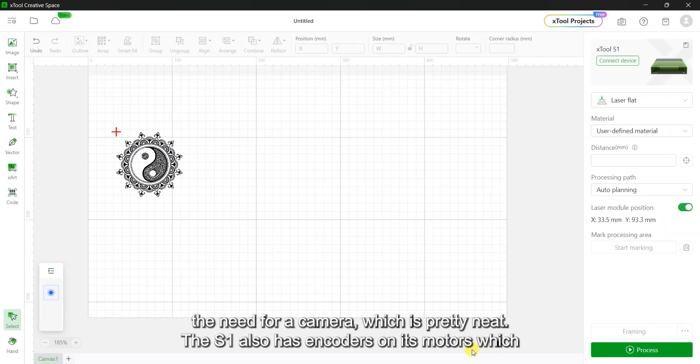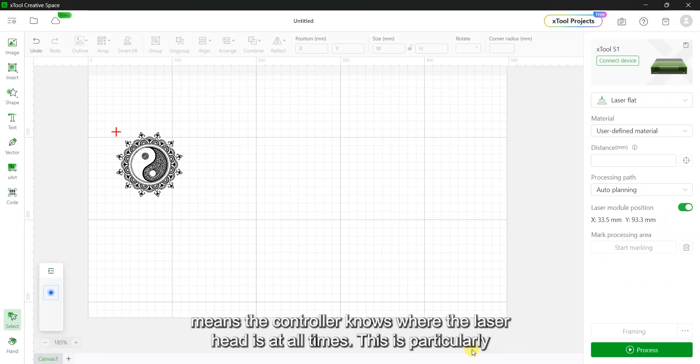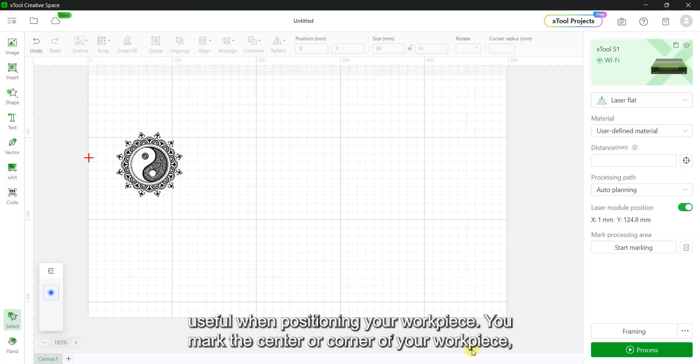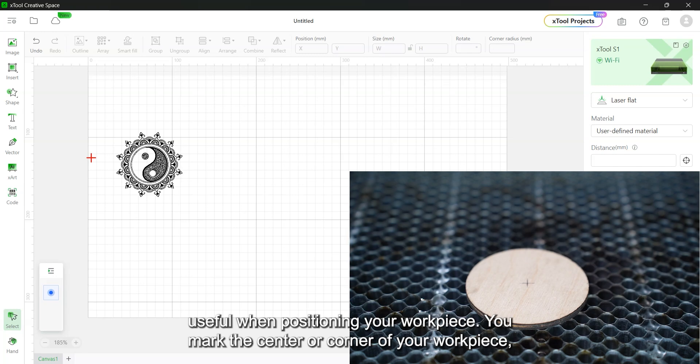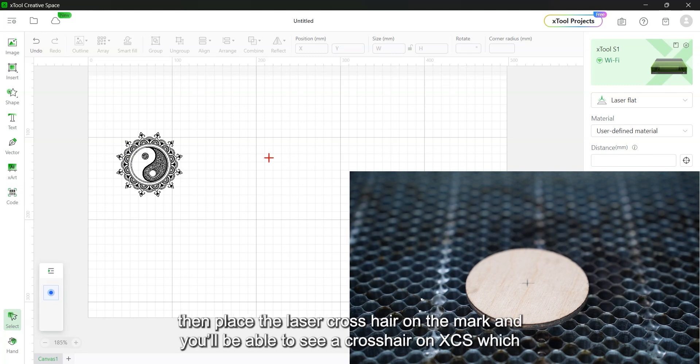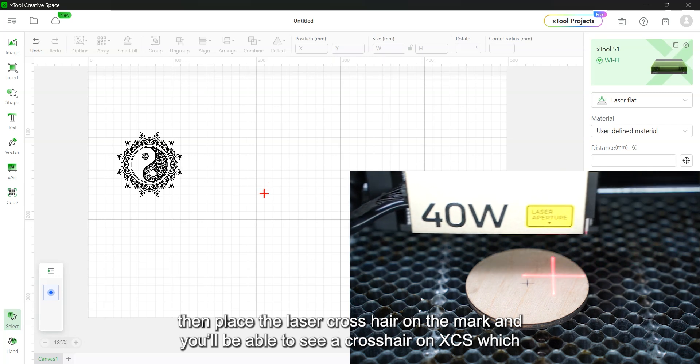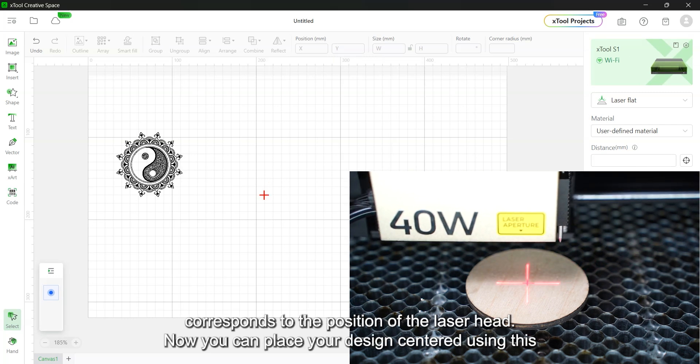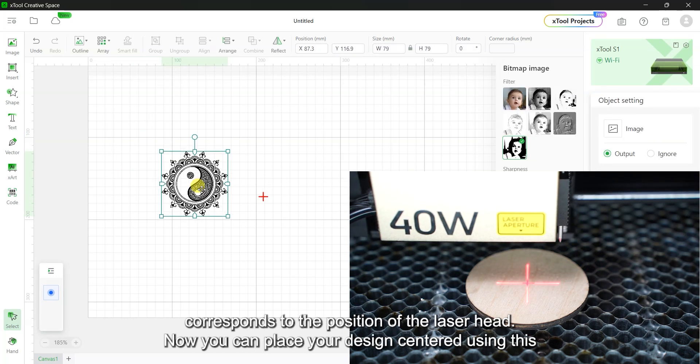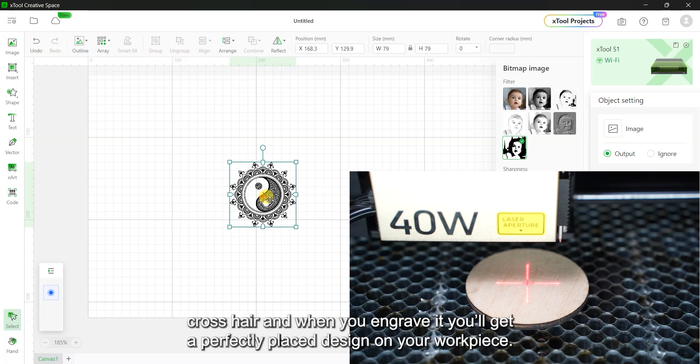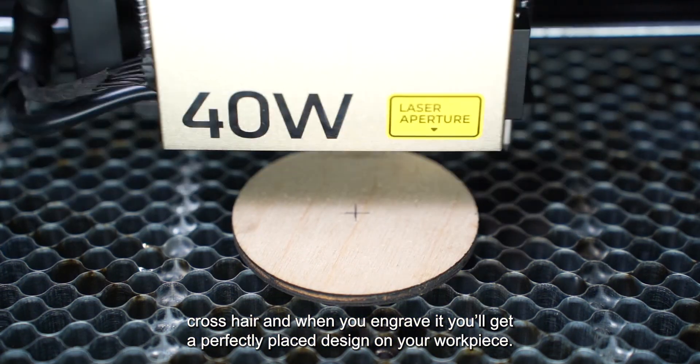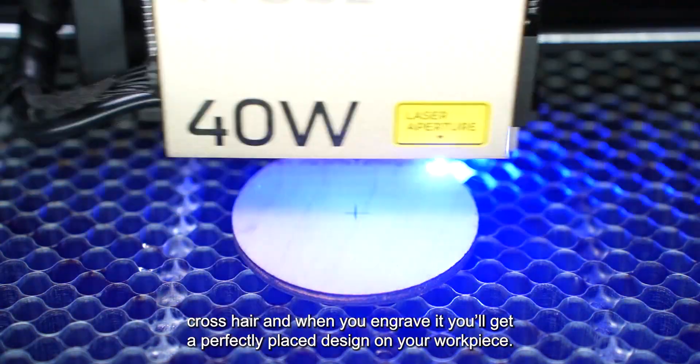The S1 also has encoders on its motors, which means the controller knows where the laser head is at all times. This is particularly useful when positioning your workpiece. You mark the center or corner of your workpiece, then place the laser crosshair on the mark and you will be able to see a crosshair on XCS, which corresponds to the position of the laser head. Now you can place your design centered using this crosshair and when you engrave it, you'll get a perfectly placed design on your workpiece.